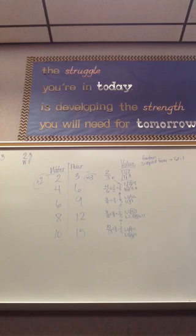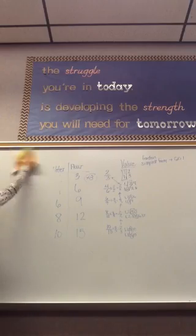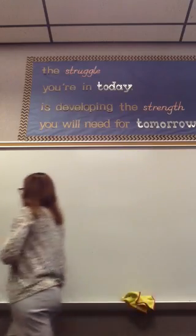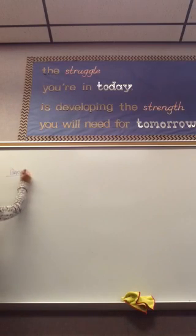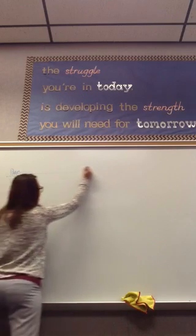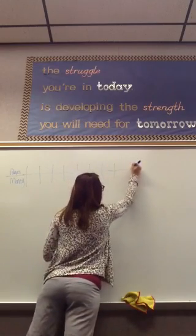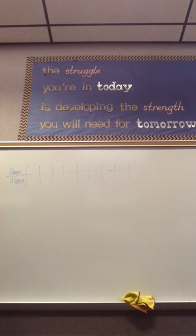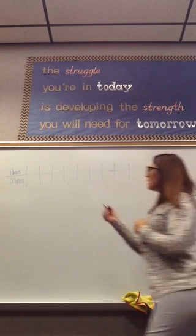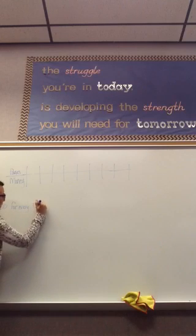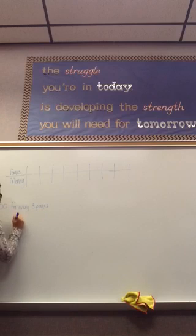Go ahead and turn to example number 2. Javier's designing webpages. What would be the first ratio they've given us for this problem? They've given us $700 for every 3 pages. So if we wrote that in ratio form, it would be 700 to 3.